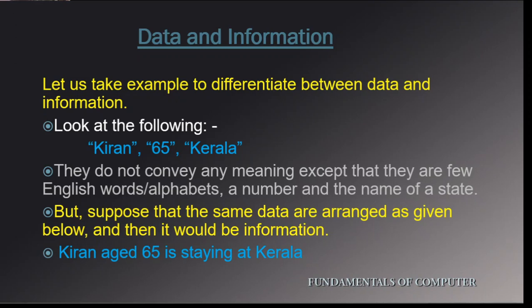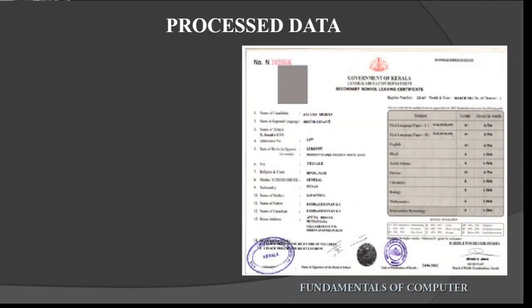So by performing operations upon data we get complete information. Operations can be of different types — sorting, adding, deleting, arranging. These are the different types of operations we can perform upon data. For example, look at the certificate given to a student after completing an examination. Here we can see two types of data: personal details of the student, Anidha Mohan, and data regarding the grades. The personal details and grade information are arranged in a stipulated manner.